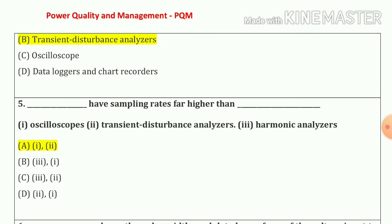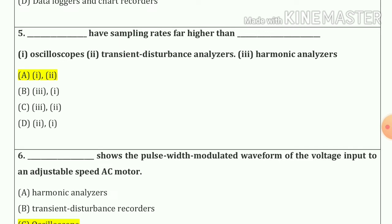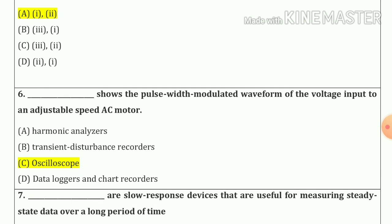Question number five: blank have sampling rates far higher than blank. First one is oscilloscope, second one is transient disturbance analyzers, and third one is harmonic analyzer. Our answer is option A, that means first and second. So oscilloscopes have sampling rates far higher than transient disturbance analyzers. Question number six: oscilloscopes show the pulse width modulated waveform of the voltage input to an adjustable speed AC motor.